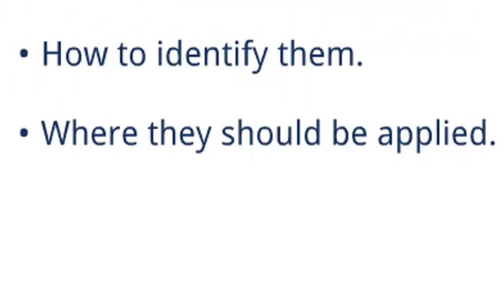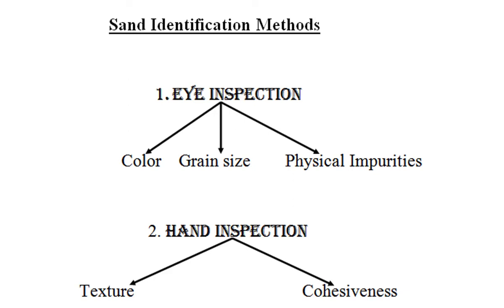My emphasis will be on how we identify sand A from sand B and what kind of job we should use sand X for. The identification is going to be done by two methods. The first is the eye inspection method — here we just check the color of the sand, observe how big the grains are, and check the physical impurities we can see with our eyes, like white particles or black particles.